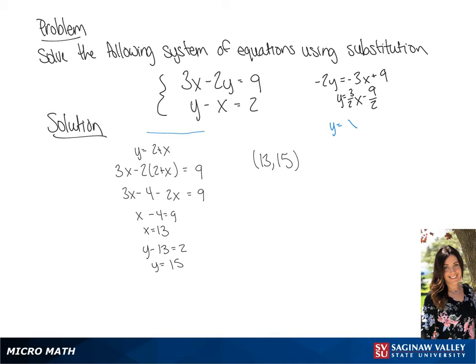Now the second equation we're going to put in slope-intercept form. For this one, we will have a slope of 1 and a y-intercept of 2. Now we're going to graph both of these lines.